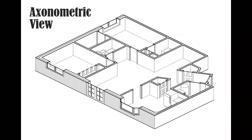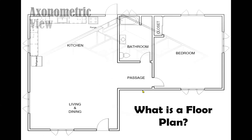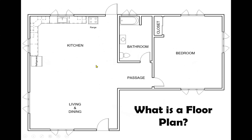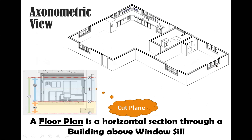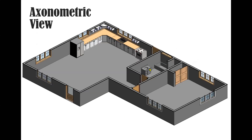We know that the floor plan is a horizontal section taken through the building, just above the windowsill. This cut takes place above the windowsill in order to capture where the windows and door openings are, as well as the fixtures in place. This is the one bedroom flat we are going to be doing, and here is the section through that same flat — a horizontal section through the building just above the windowsill. This is the same thing but in a shaded mode — an axonometric view giving you a pictorial floor plan layout.